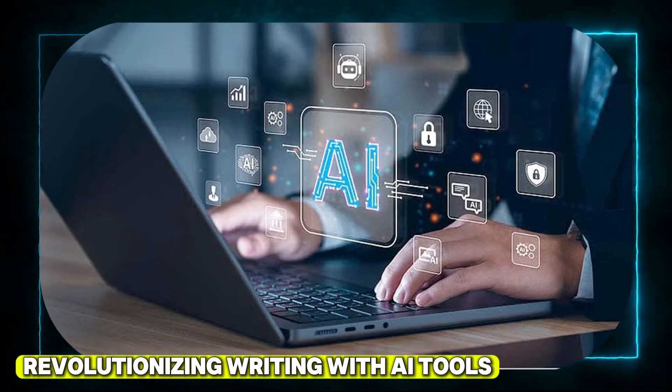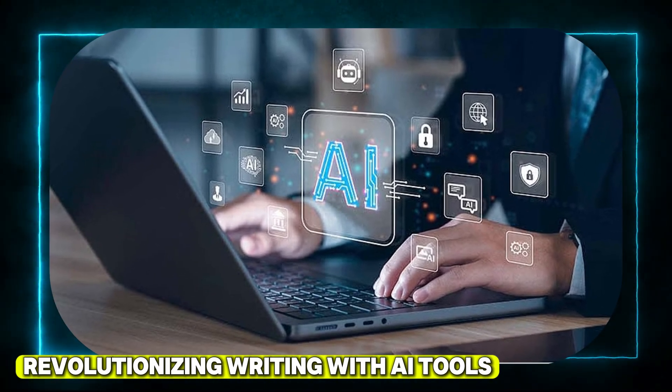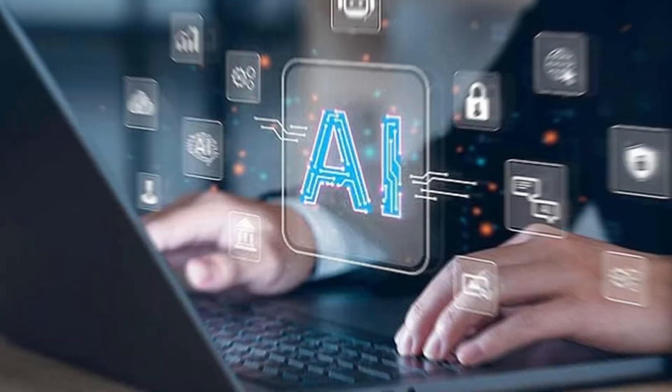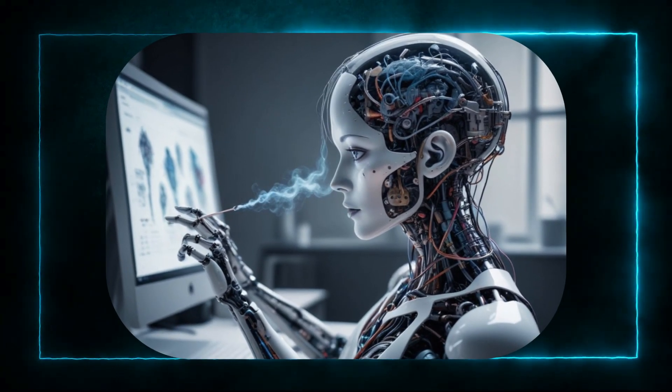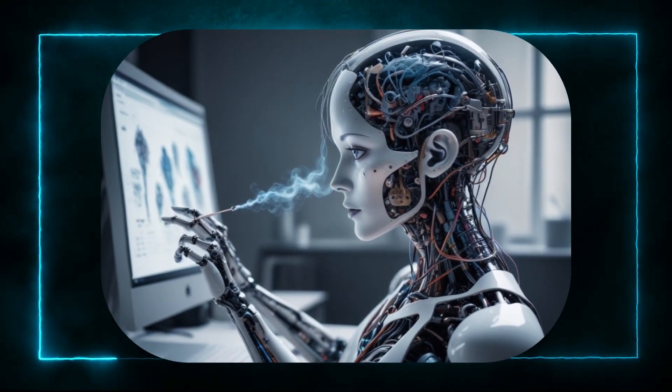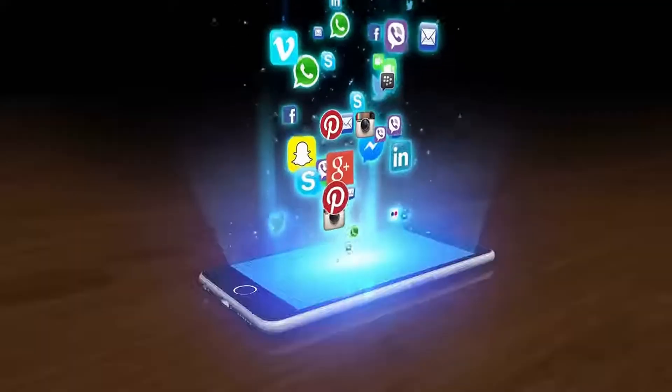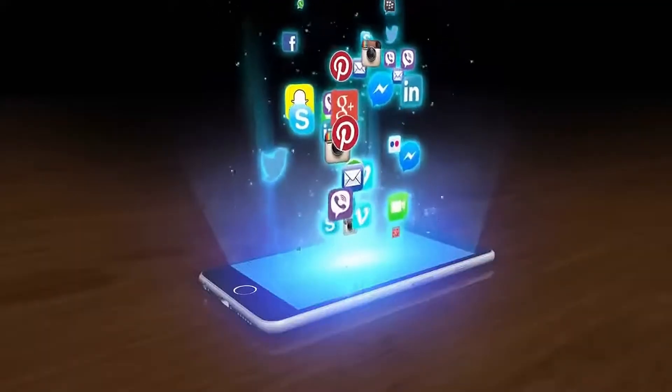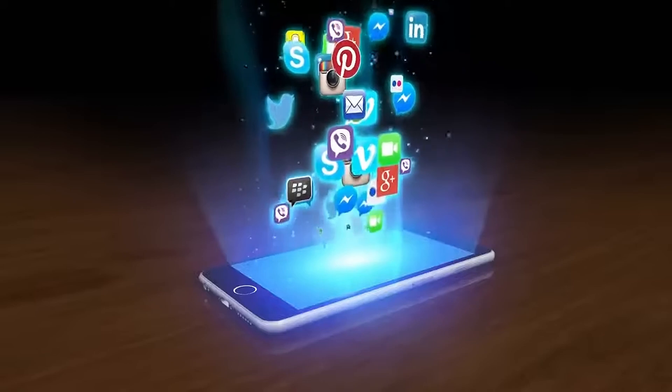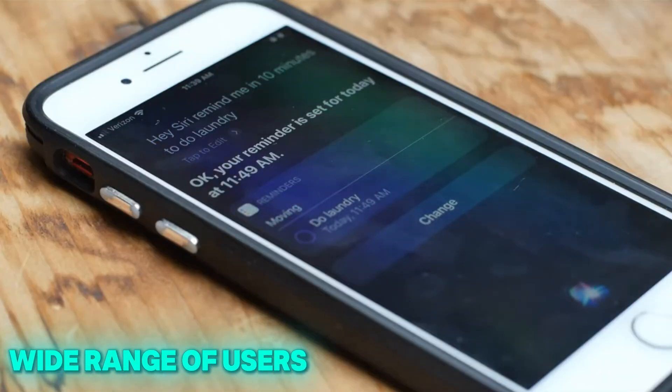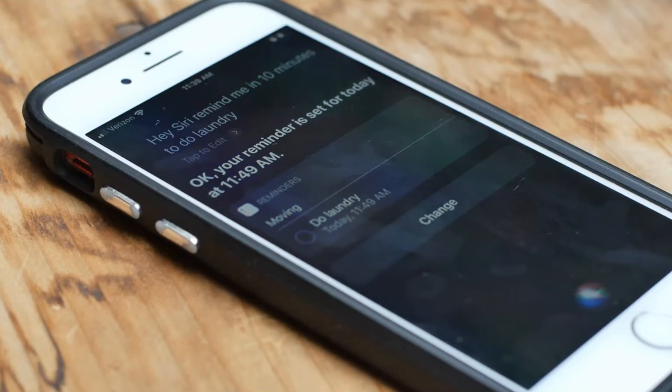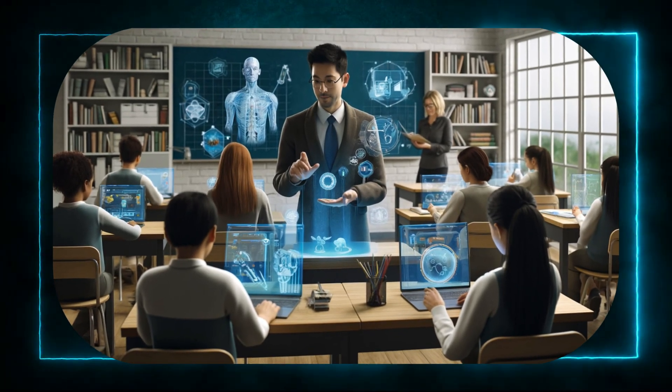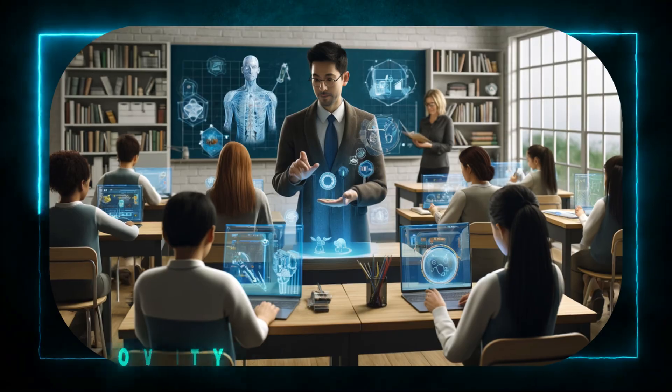Revolutionizing writing with AI tools. One of the most practical applications of Apple Intelligence is its AI-powered writing tools, which aim to enhance productivity and creativity. These tools are not limited to just Apple's apps but extend to third-party applications, making them versatile for a wide range of users. The proofreading feature goes beyond basic grammar checks, analyzing sentence structure, tone, and even context to provide suggestions that improve overall readability.